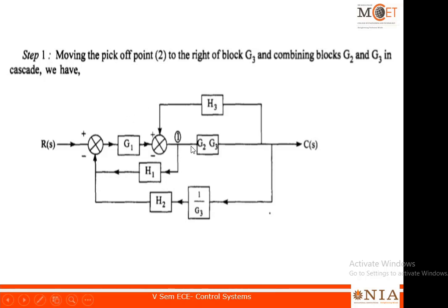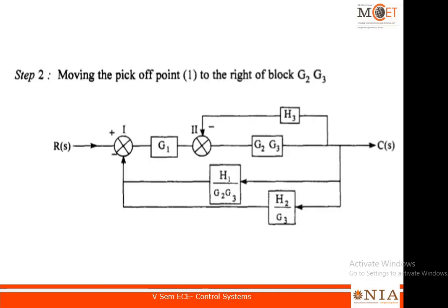When we move this branching point to the right, g2g3 is skipped, so this particular branch has to be multiplied by 1/(g2·g3). You can see that h1 · (1/(g2·g3)) becomes h1/(g2·g3). Again, the two blocks h2 and 1/g3 are clubbed together to give h2/g3.